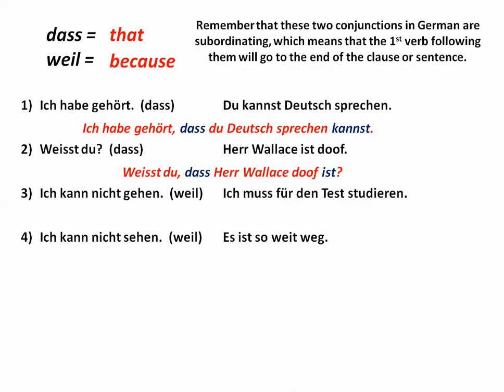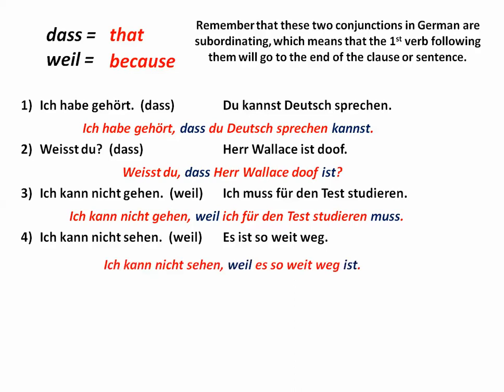Weißt du, dass Herr Wallis doof ist? Ich kann nicht gehen, weil ich für den Test studieren muss. Ich kann nicht sehen, weil es so weit weg ist. Just remember, when using subordinating conjunctions — we have a whole video on those, there are numerous examples — Dass und Weil are the most common.